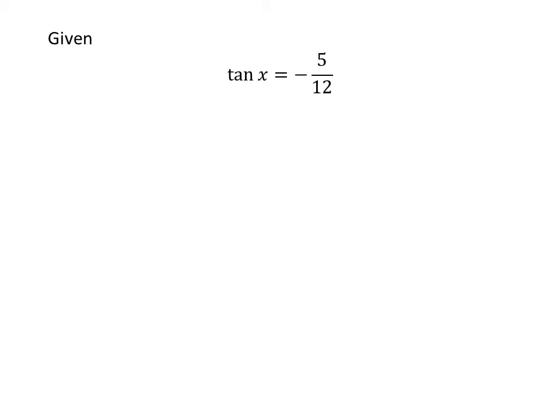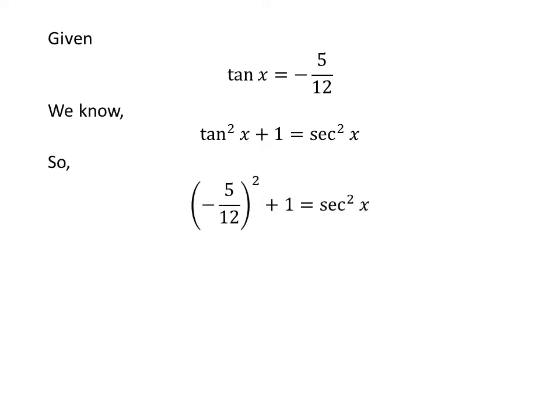It's given that tangent of x is equal to minus 5 upon 12 and x lies in the second quadrant. We know the trigonometric identity: square of tangent of x plus 1 is equal to square of secant of x. Plugging the given value of tangent of x into the identity gives us square of minus 5 upon 12 plus 1 is equal to square of secant of x.